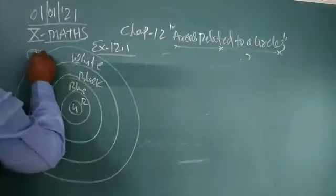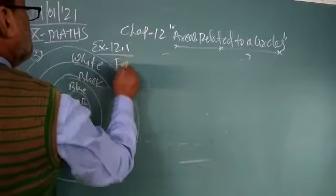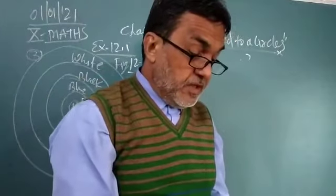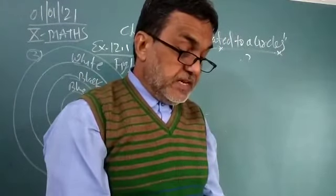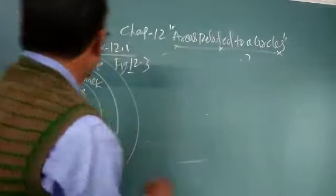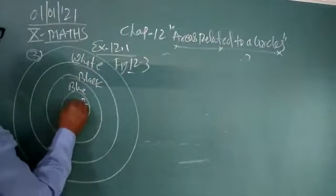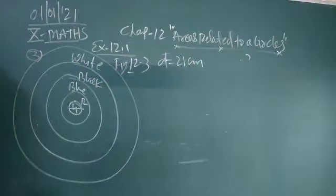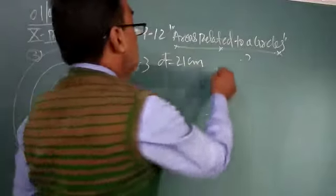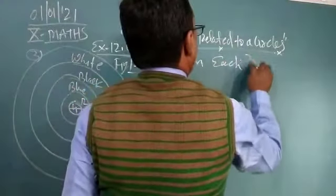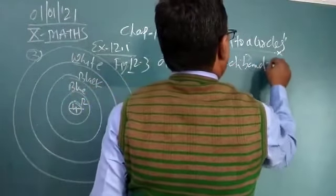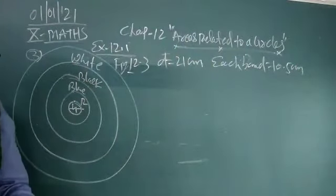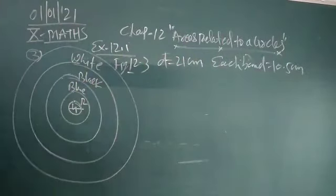In this figure, you want to find the area of the region. Diameter of this concentric world, the smallest, d is equal to 21 centimeter. And each of the band is 10.5 meter wide. Then find the area of each of the five scoring regions. So first we find the area of gold region.